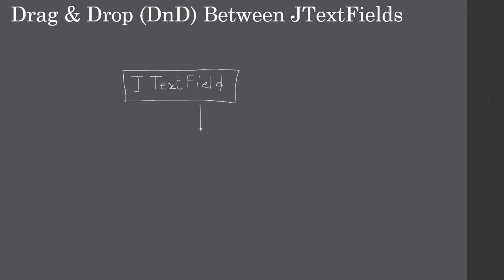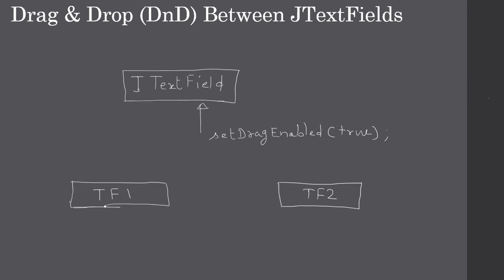The implementation will be simple. We will create a JTextField. By default the JTextField does not support drag and drop — we have to make a call to setDragEnabled and pass true. That means the text field will now start supporting drag and drop.